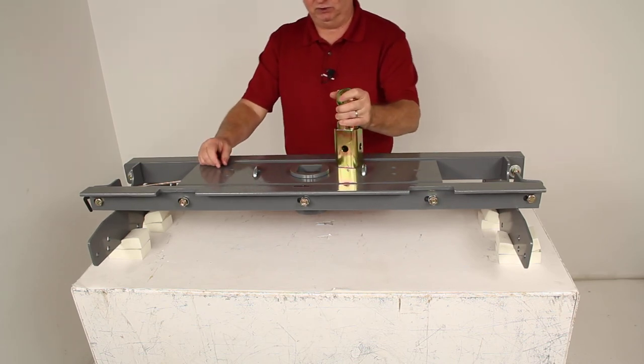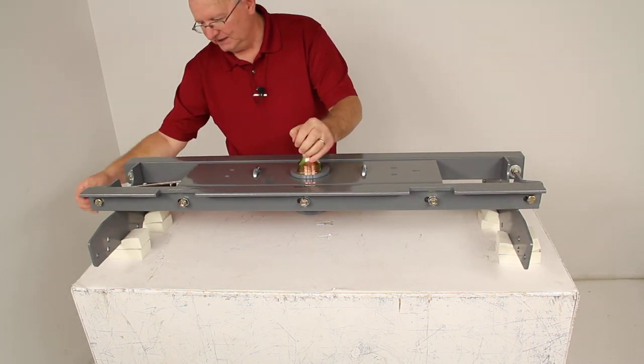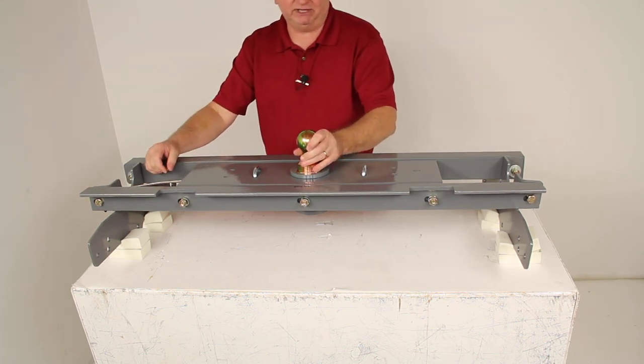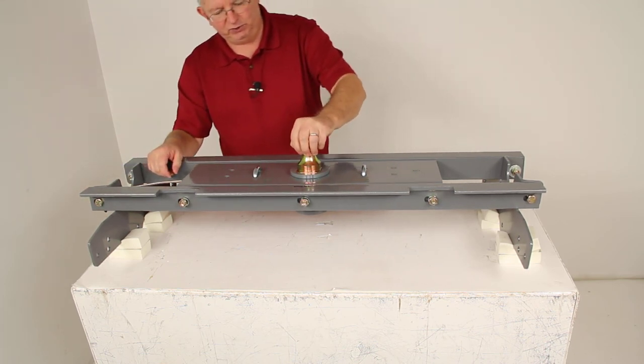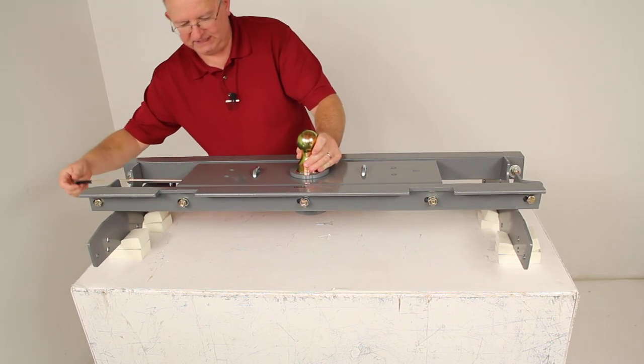If you're going to tow a gooseneck, you can drop the ball into place. Twist this handle, that'll release the pin and lock it into place. You're ready to tow. When you're done towing and you want to remove it, just pull open the handle and twist it. That'll lock it open. You can remove the ball.